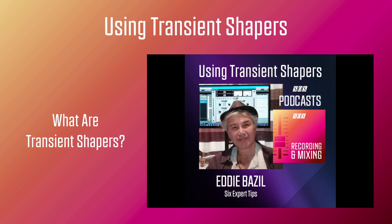Nowadays, more and more producers head for a transient shaping tool before using an equalizer. Whereas equalizers are excellent for working on specific frequencies or a range of frequencies, transient shapers use detection circuits to extract and split the incoming audio signal into two distinct parts — transient and body — and offer editing and processing functions for each part.